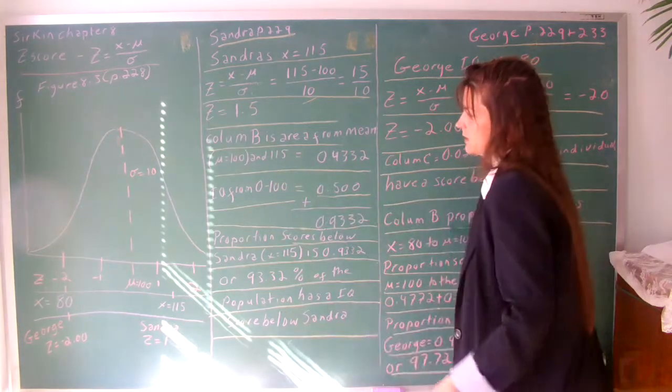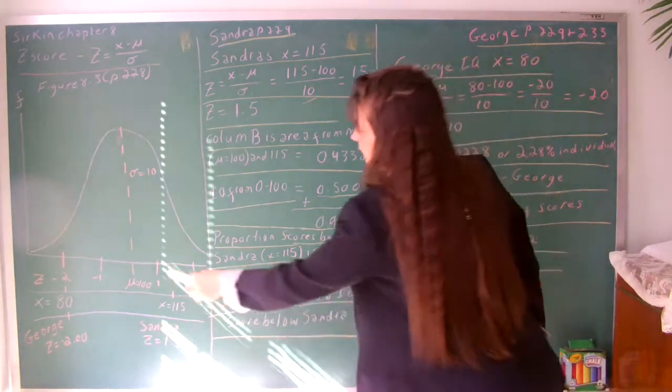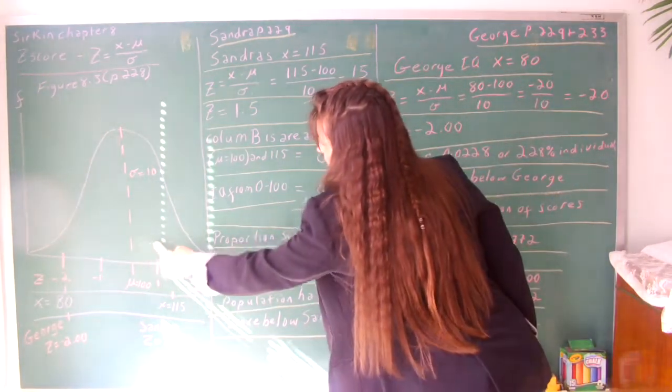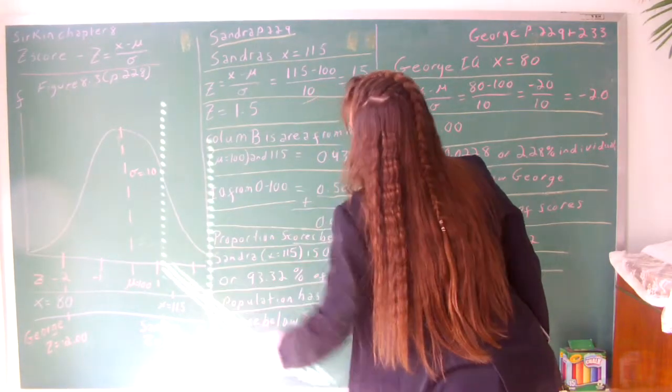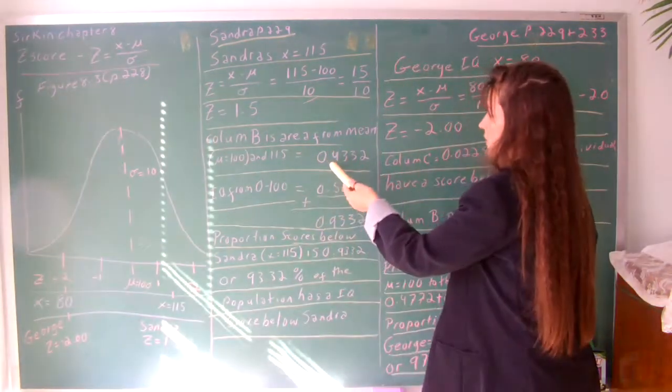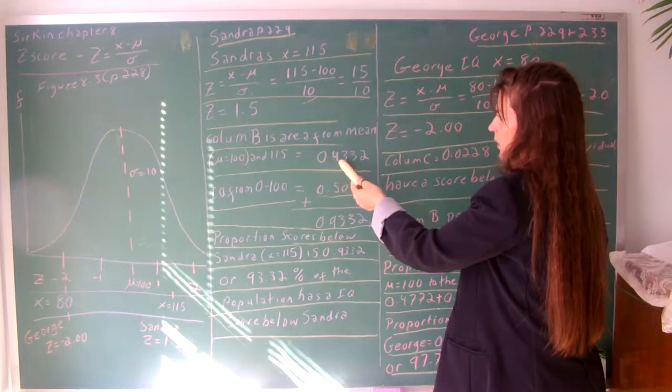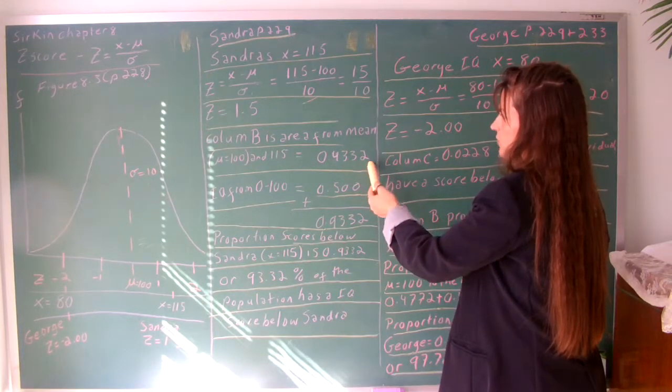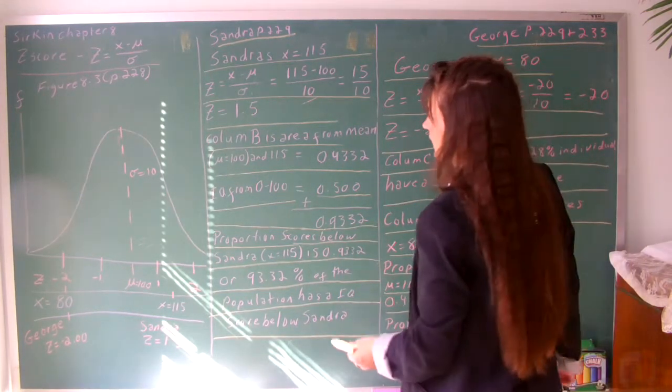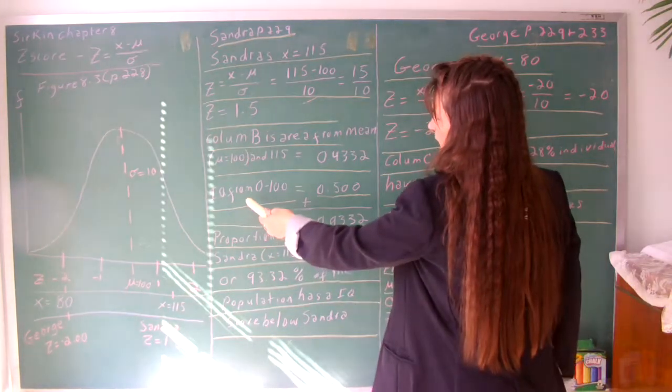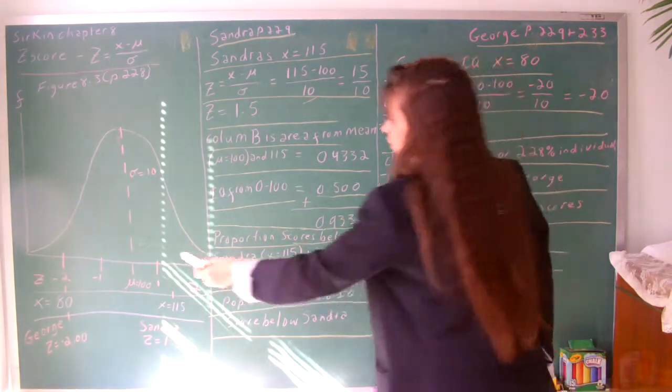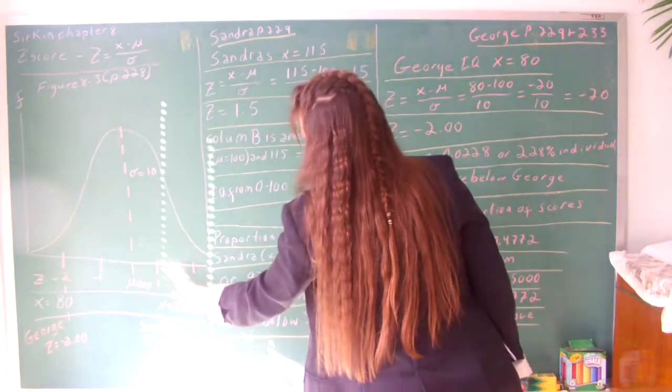The proportion is 0.4332. That's the area between the mean to her score of 115, which is 0.4332. Then we have to figure that since we have the mean to her score, then we look at...